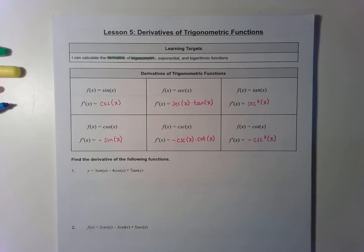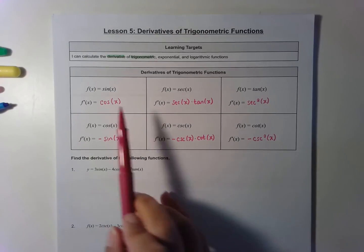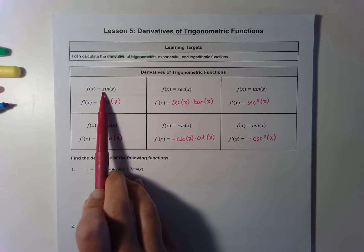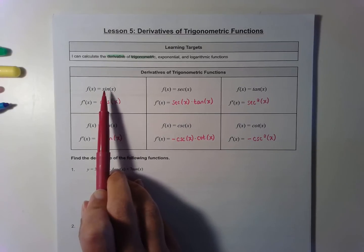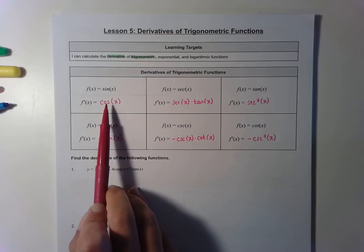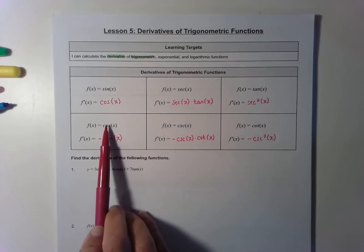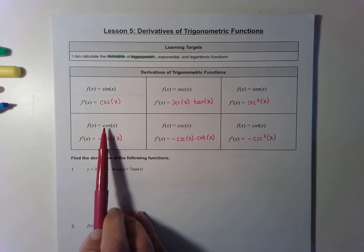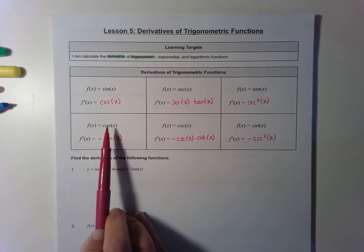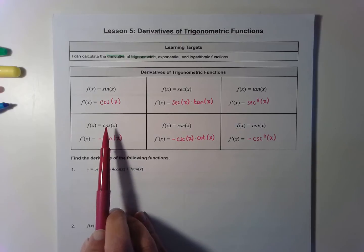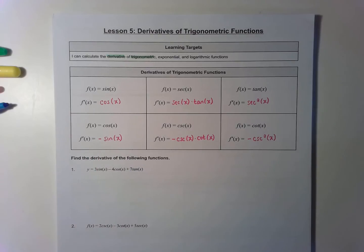The way I remember that is that S stands for same. So if you take the derivative of something that starts with an S, it has the same sign. And if you take the derivative of something that starts with a C, C stands for change — and that means you change the sign. That's kind of how I remember that.